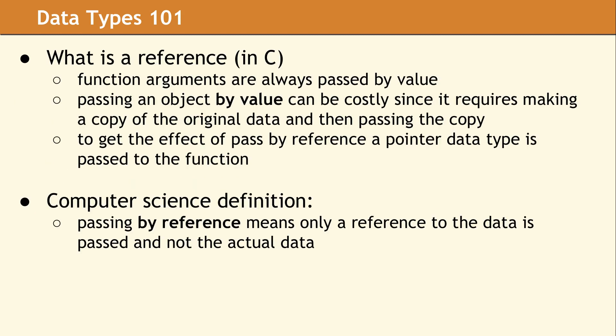To talk about how references work in C++, we need to start by looking at what references meant in C. The actual C language did not define the term reference, and so programmers were free to define it to mean whatever they wanted. Since function arguments in C are always passed by value, and this can be very costly, people wanted the effect of the computer science term passing by reference, which means that only a reference to the data is passed. To get this effect in C, you would pass a pointer to a function. So C programmers would refer to this technique as pass by reference.